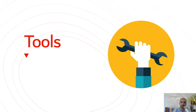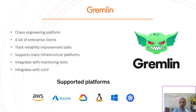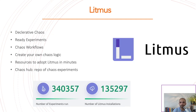Let's look at the tools. Starting with Gremlin — that's a Failure as a Service leader in the industry. It's a complete chaos engineering platform with many enterprise customers. You can track reliability improvement tasks, see where systems break, create tasks, and track if they've been fixed. It supports many infrastructure platforms — AWS, Azure, anything you name. It also integrates with different monitoring tools and with your CI/CD pipeline, so you can run failure testing at the end of a production deployment.